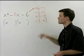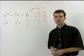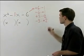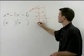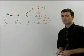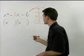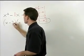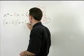So which pair of factors adds to negative 1? The negative 3 and the positive 2. So our answer is x minus 3, x plus 2.